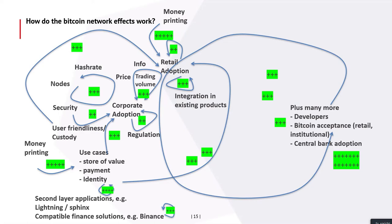That picture also shows the risks. If regulation is very, very negative — extremely negative — that would create a negative feedback loop. If security became an issue, and that's why proof-of-work hash rate is really important over proof-of-stake, it could create a very negative impulse in the whole system. You also see in that picture there will be bubbles: the feedback loop between price and adoption — price goes up, adoption increases — will create limited bubbles, and that will always happen. But overall, we will see a huge number of positive feedback loops driving adoption and price.